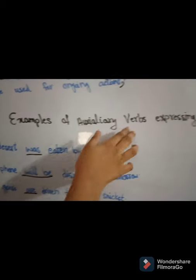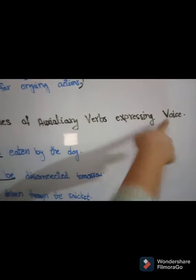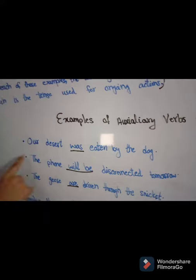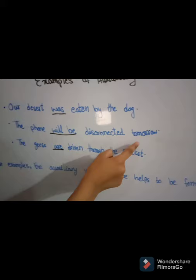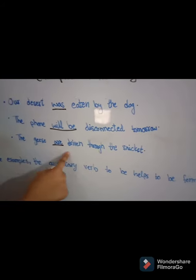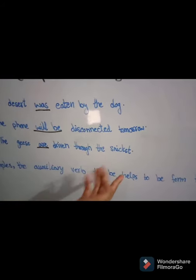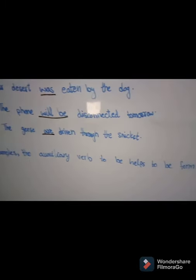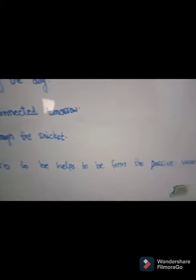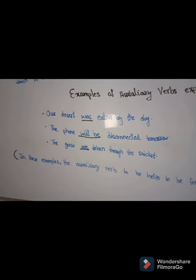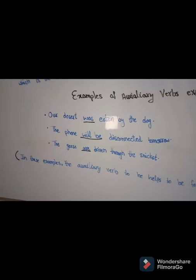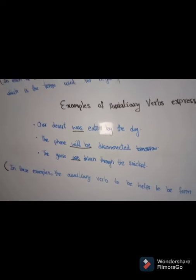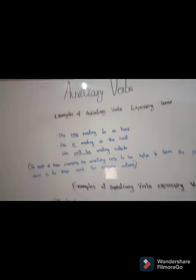Examples of auxiliary verbs expressing voice — three examples: 'Our dessert was eaten by the dog.' 'The phone will be disconnected tomorrow.' 'The keys are driven over the snicket.' In these examples, the auxiliary verb 'to be' helps to form the passive voice. A verb is said to be in the passive voice when its subject does not perform the action of the verb, but has the action done to it.